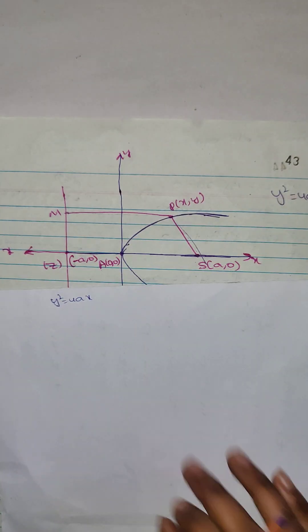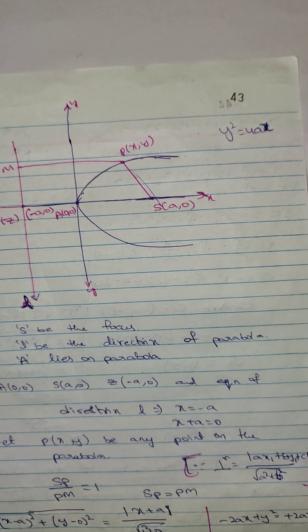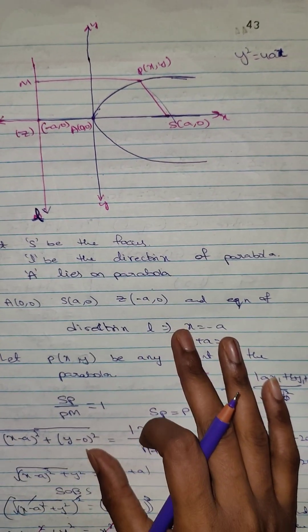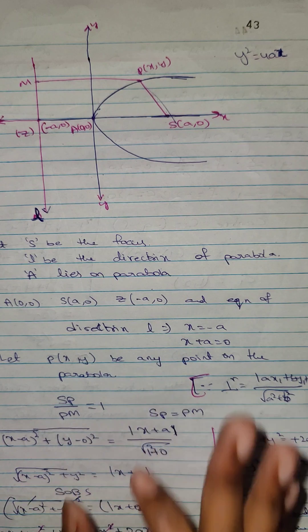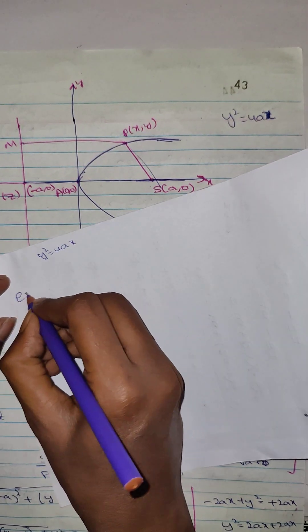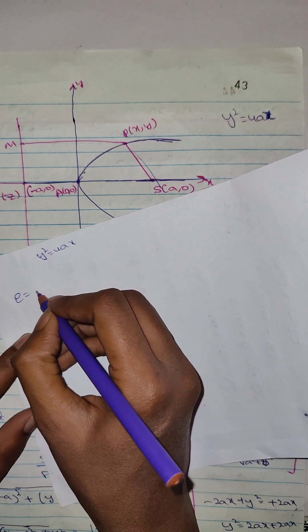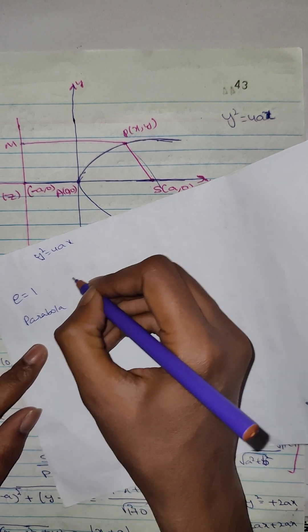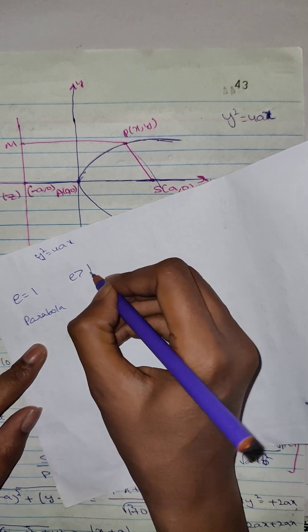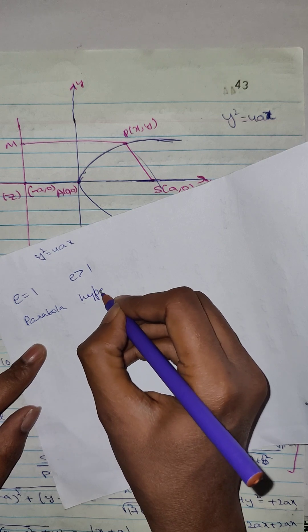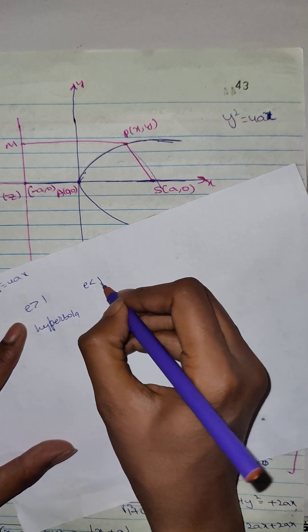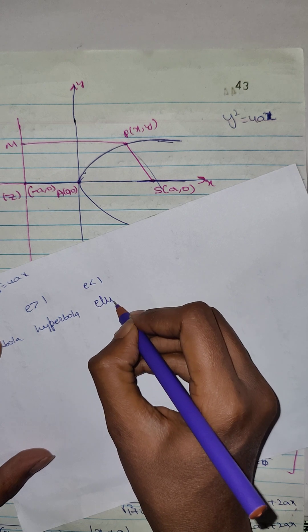Let me explain the terminology. When eccentricity equals to 1, it is a parabola. When eccentricity is greater than 1, it is a hyperbola. When eccentricity is less than 1, it is an ellipse.